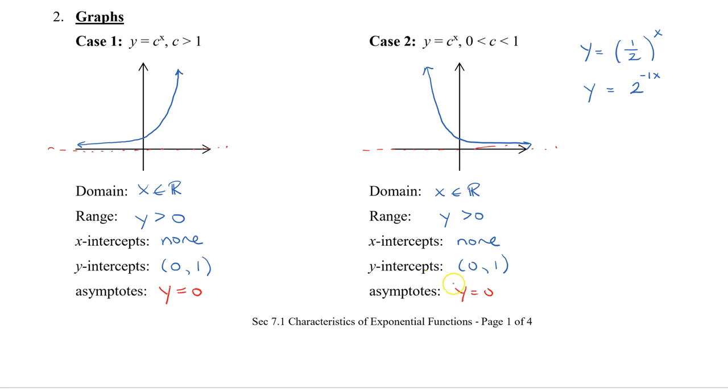If you're looking for the y-intercept, remember that we can plug in x is 0, and then figure out whatever the y value is. So in both of these cases, because the exponent is 0, this value will always be 1. Now, it's not to say that we can't shift or translate the graph up and down, and we will do that in another section.